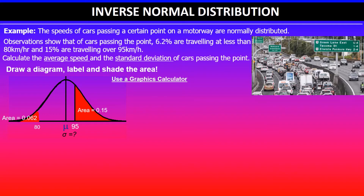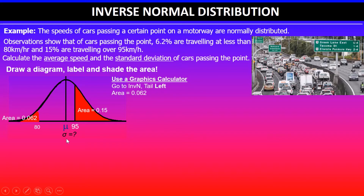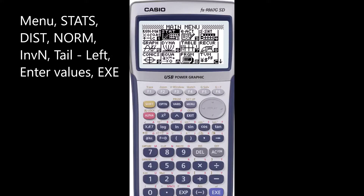We'll use a graphics calculator and go to inverse normal, changing the tail settings to left. With the left tail setting, we'll use the area value of 0.062. Since we are not given the mean value and the standard deviation — either or both are unknown — we'll use a standard normal to find the corresponding z-value, where mean is 0 and standard deviation is 1.